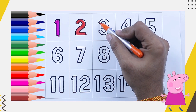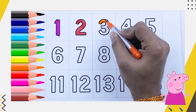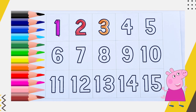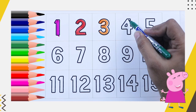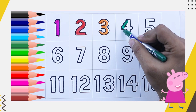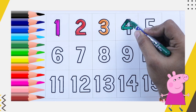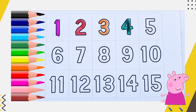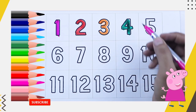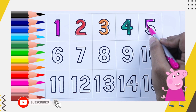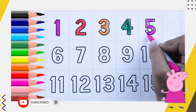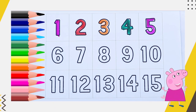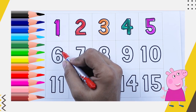Orange color, number 3. Green color, number 4 — it's number 4. Pink color, number 5 — it's 5, number 5. What's next?